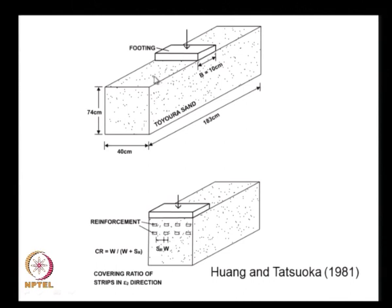To recap, Binquet and Lee took a strip footing resting on a soil bed reinforced with a number of discrete ties, each having a certain width and thickness, provided at different vertical spacings. They first observed the experimental performance and then tried to explain it through simplistic theoretical analysis.